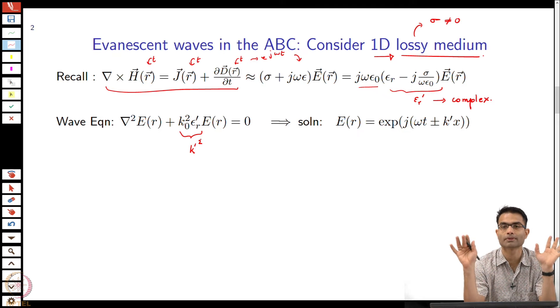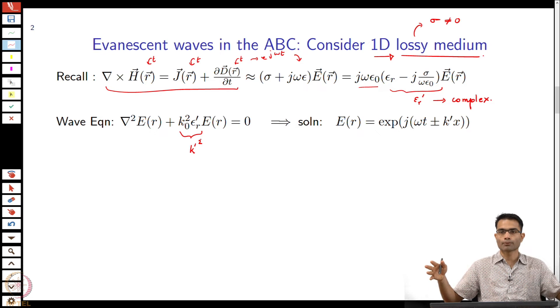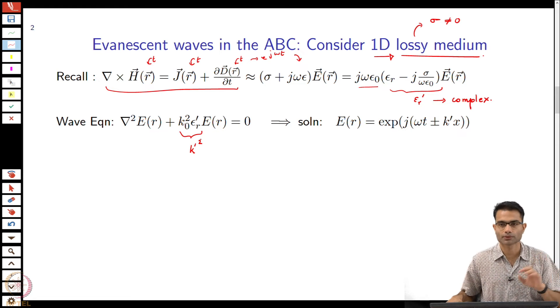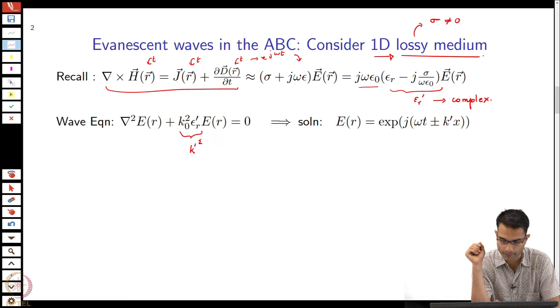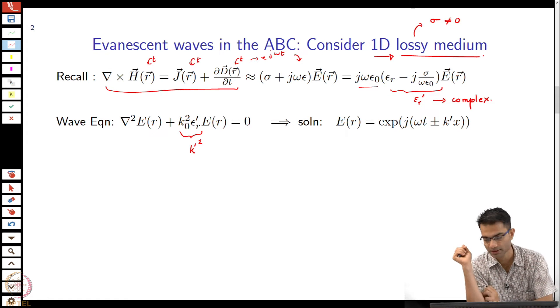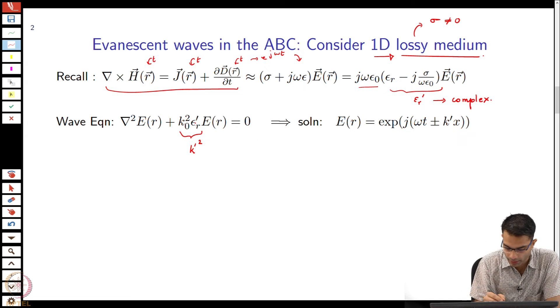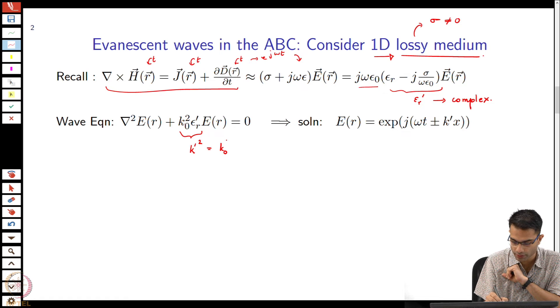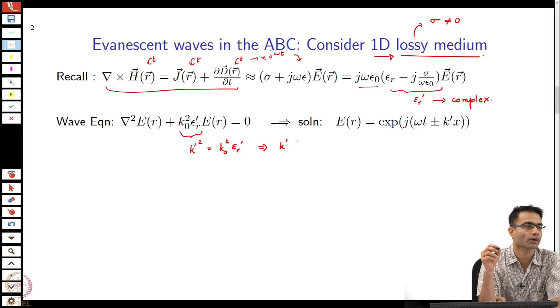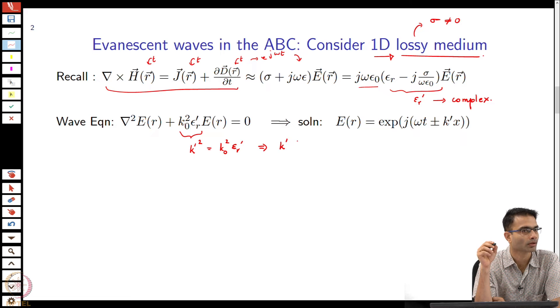We are considering a homogeneous lossy medium. This wave equation that I get is of this kind over here. The only change that happens is that instead of k naught squared I get epsilon r prime, whatever was the relative permittivity comes in over here. So I am going to call this term as k prime squared. We can imagine like you know I have say water here and I am doing FDTD within that, just a 1D medium, not even considering an object right now.